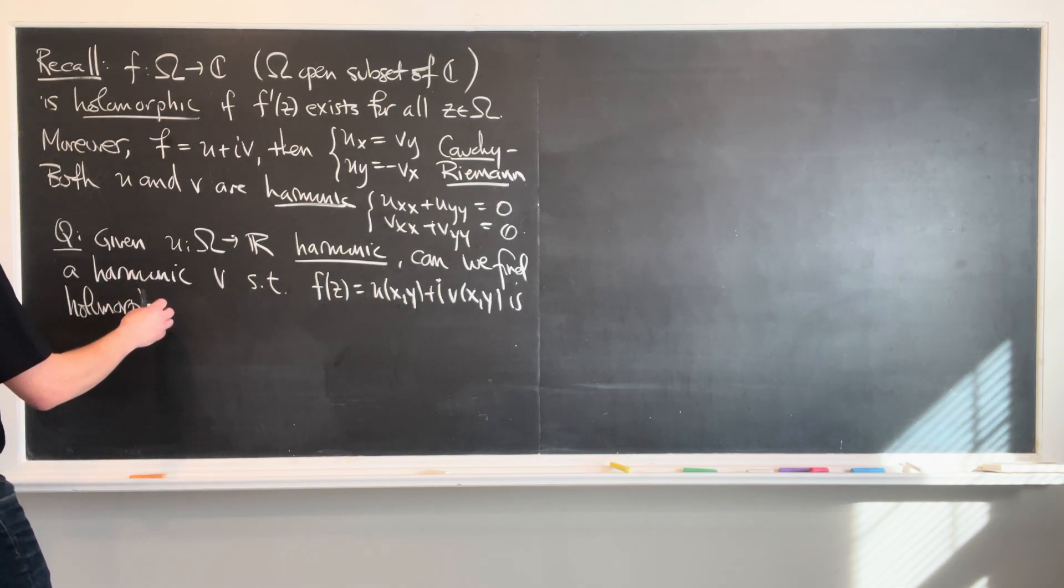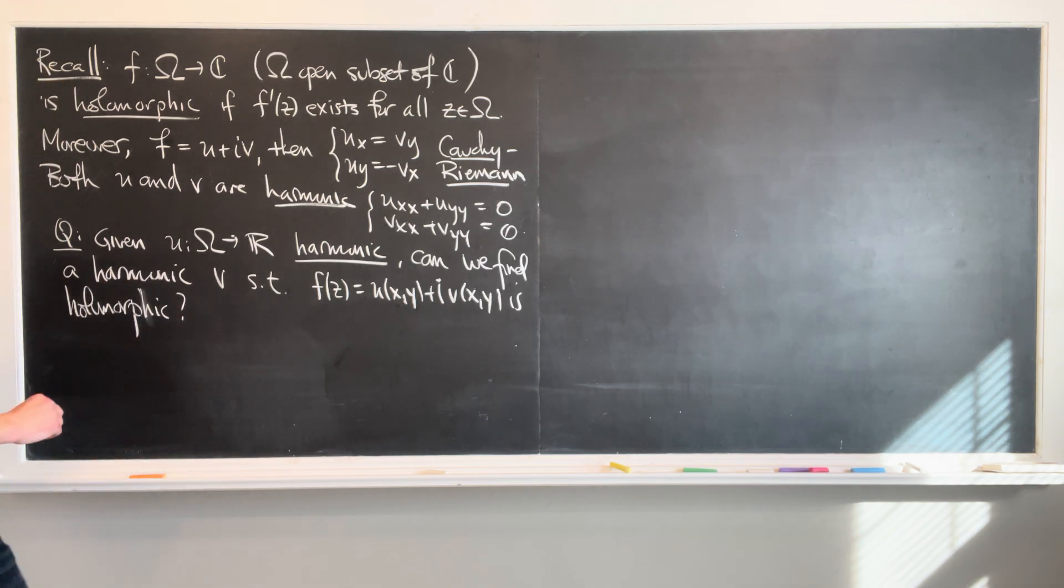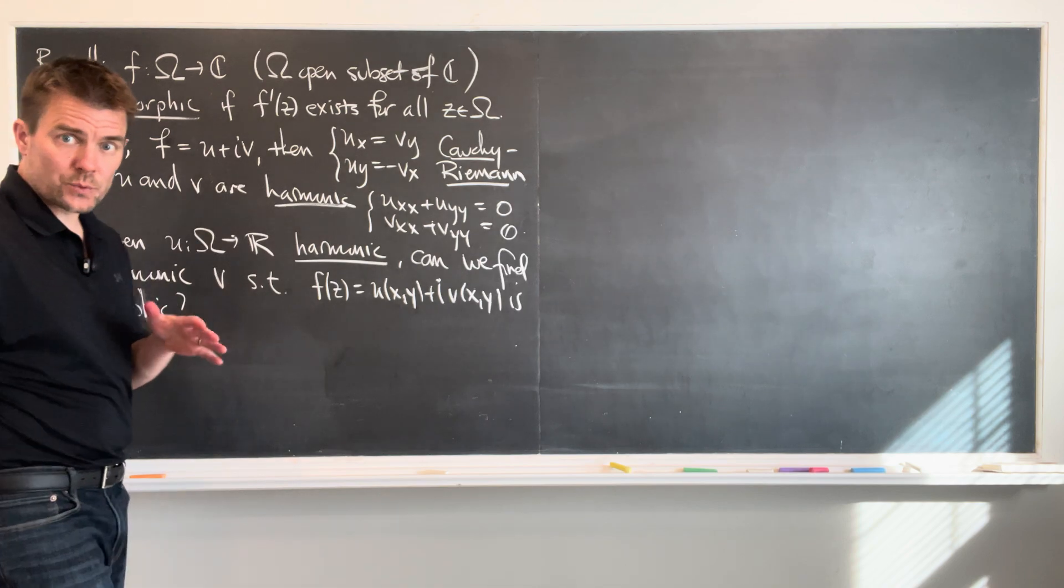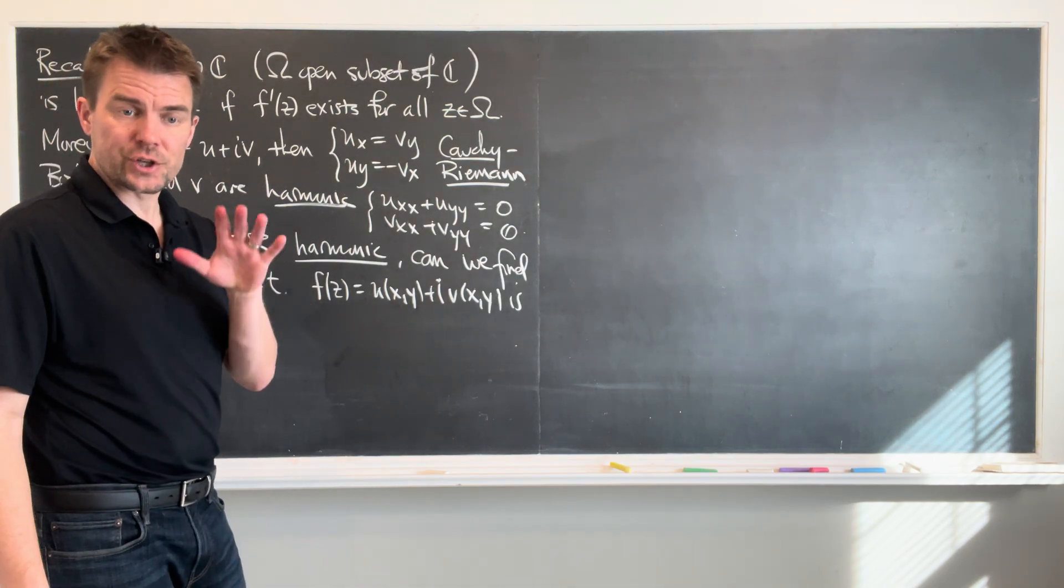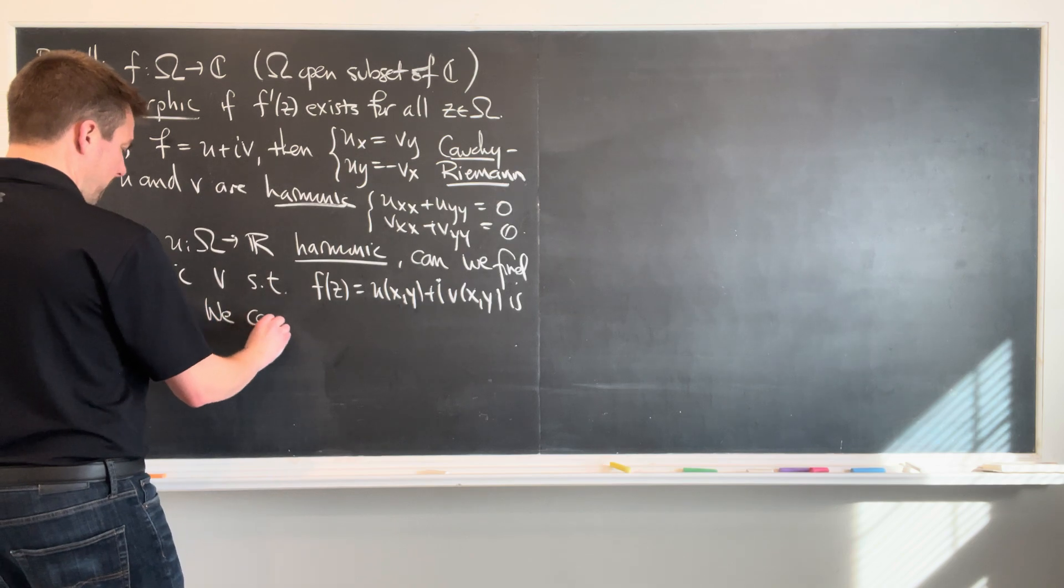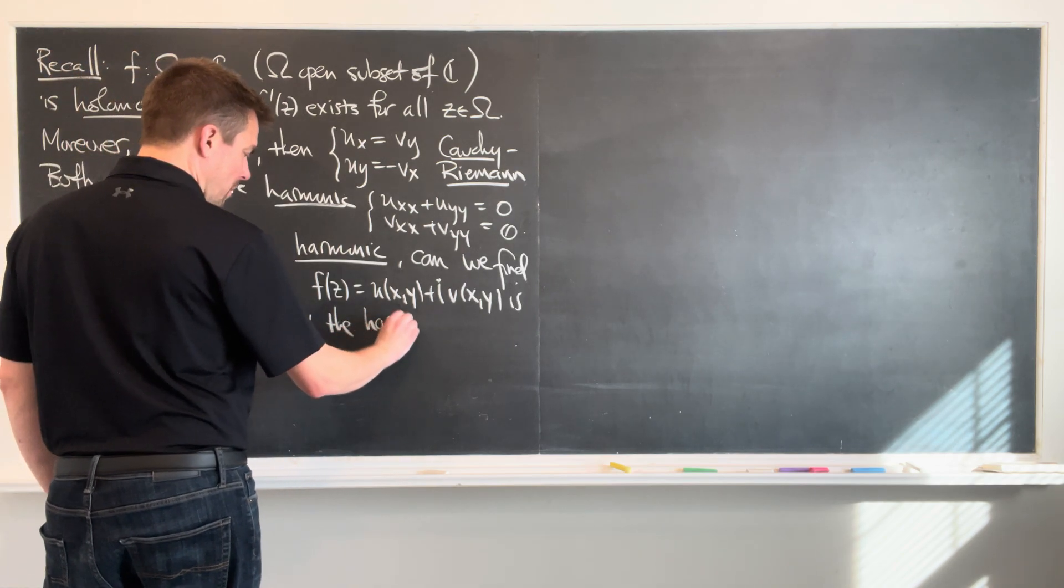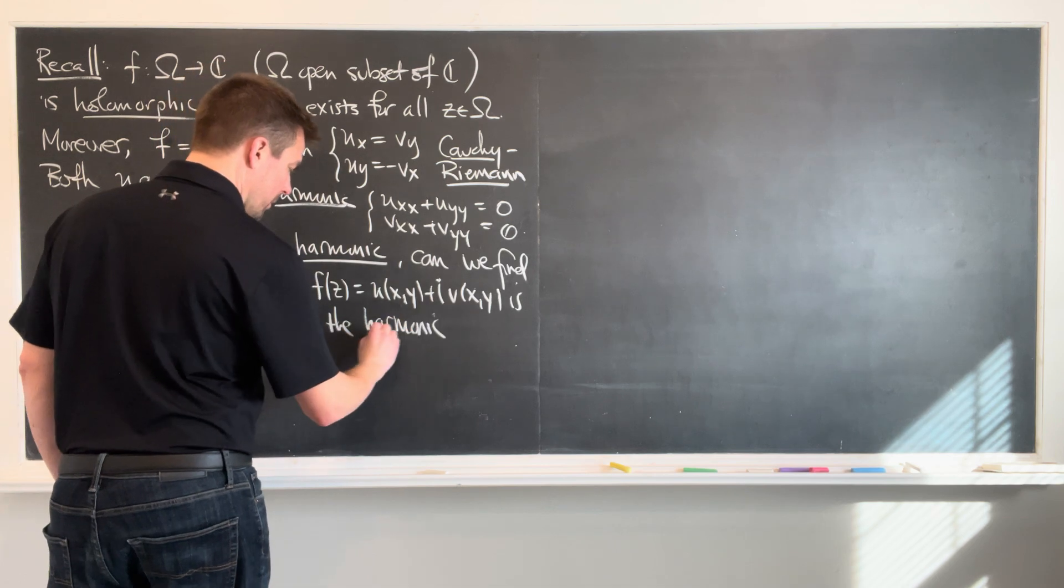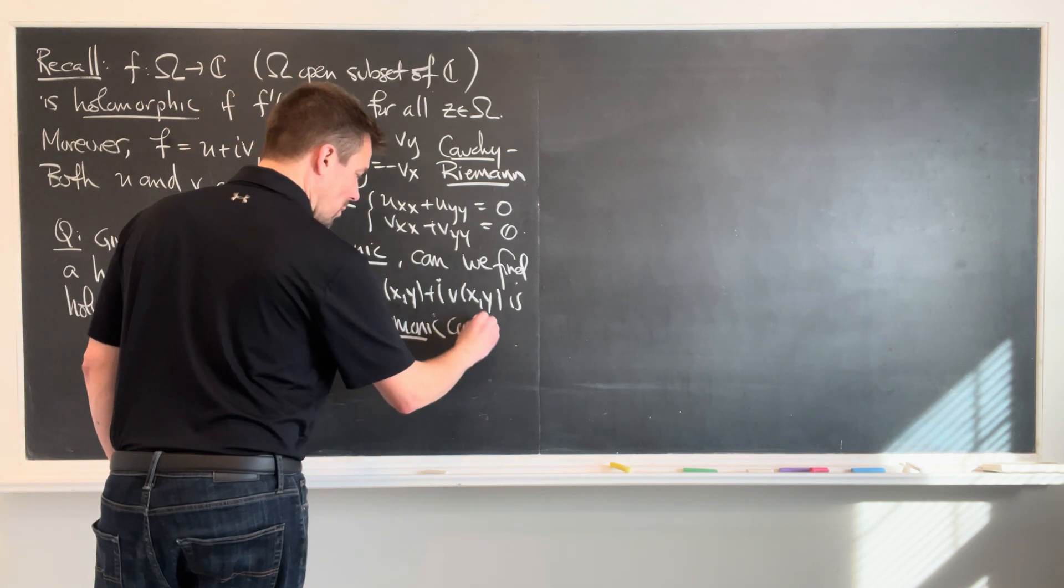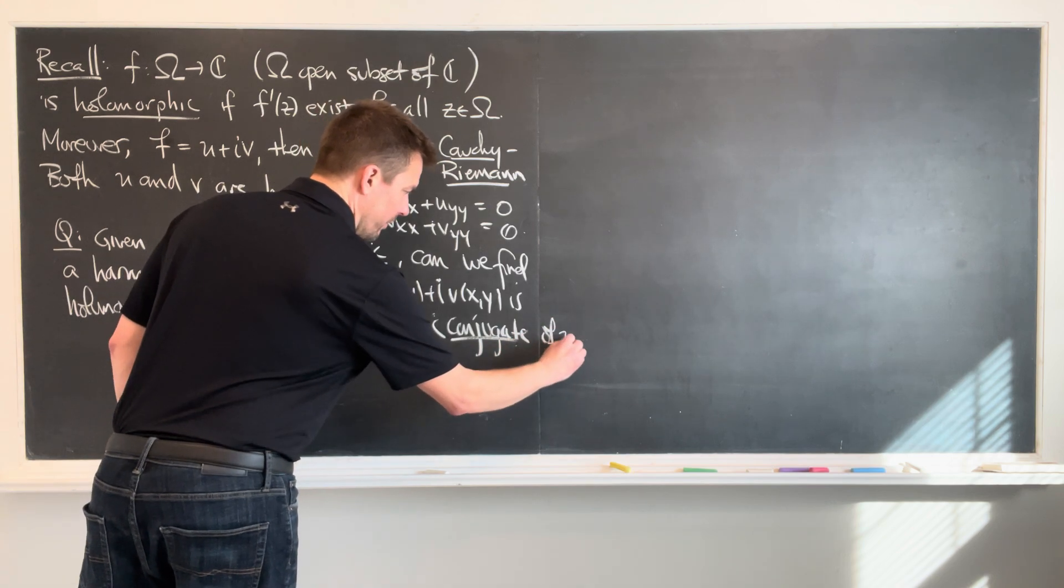is holomorphic? If such a v exists, we call v the harmonic conjugate of u.